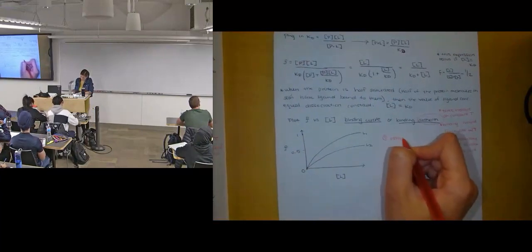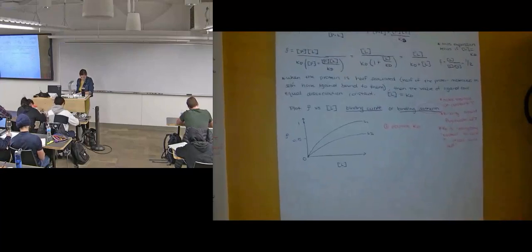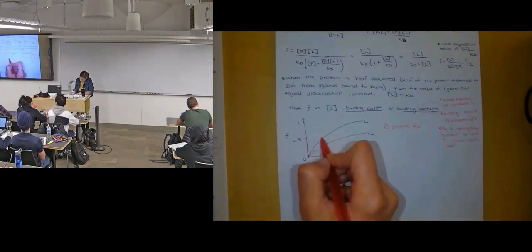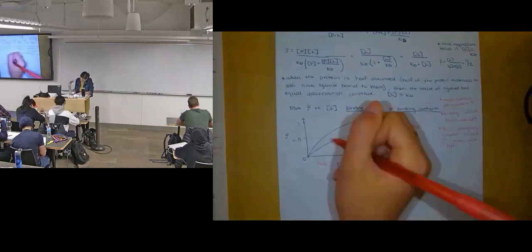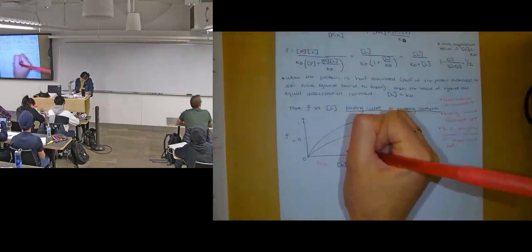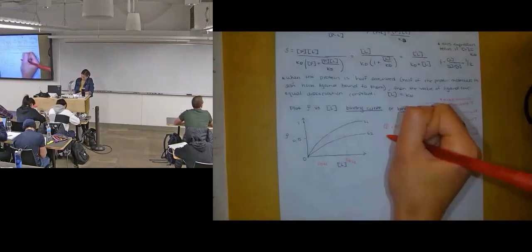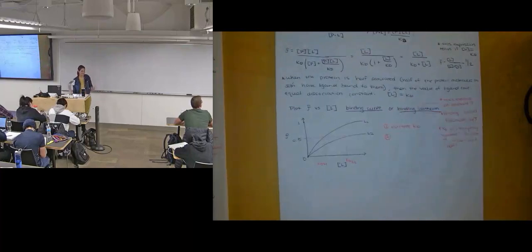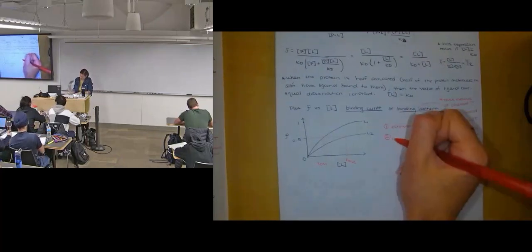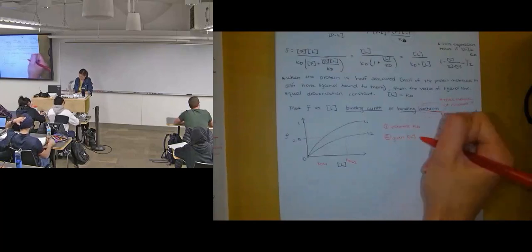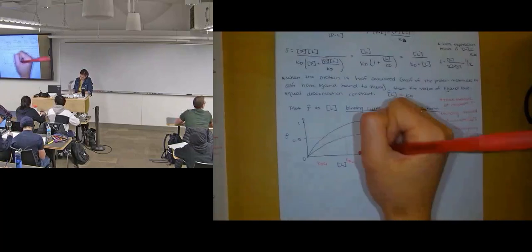A binding curve is good for a couple of things. Number one, estimating KD. We can get our dissociation constant for the binding between these two species. We said it's at 0.5, so here is KD for ligand one and here is KD for ligand two. I can say almost definitively you will be given a binding curve and asked to take information off of it. If you are given a particular concentration of ligand, you could estimate the fractional occupancy.